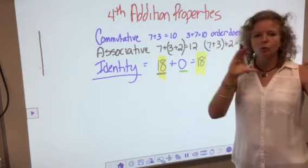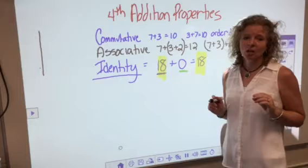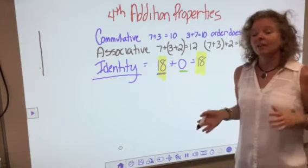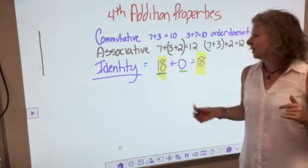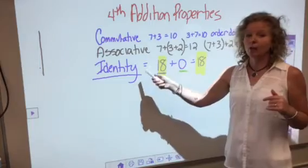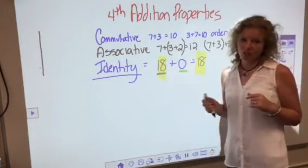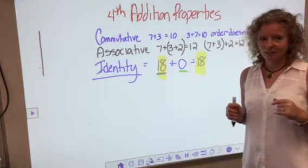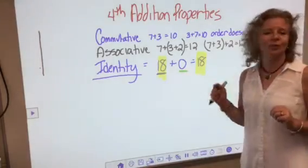And the identity property of addition, you think of 0. That's different than the identity property of multiplication, so I want you to remember this one as the identity property of addition. 0 doesn't change the identity in addition. Got them? Those are three properties for you for addition.